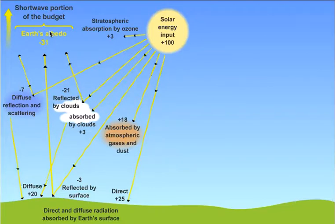That leaves behind 69 parts of solar energy. So let's see what happens to those 69 parts. 3% are absorbed within the stratosphere by ozone. 18% is absorbed by the rest of the atmosphere or by dust. And then 3% is absorbed by clouds.